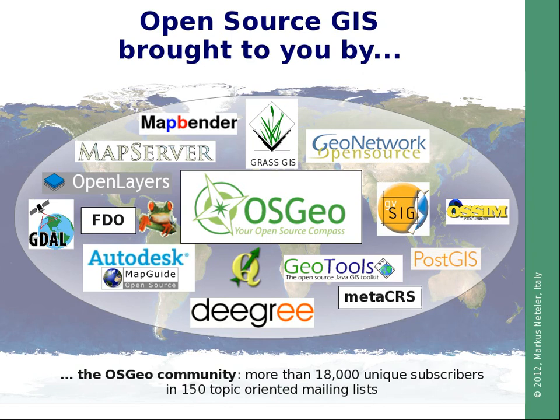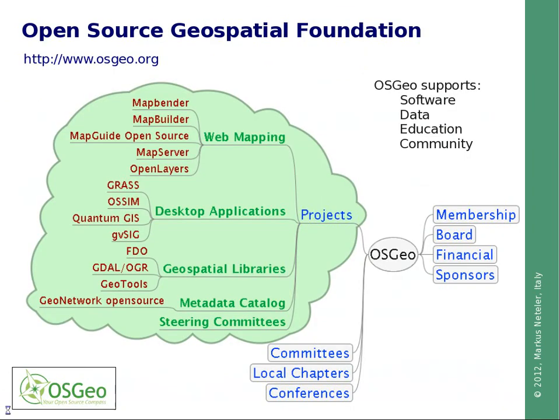How does the landscape of the Open Source Geospatial Foundation look? In the first place, there are the different projects related to web mapping, desktop applications, geospatial libraries, metadata, and catalogues. All of them have steering committees to organize the related communities.